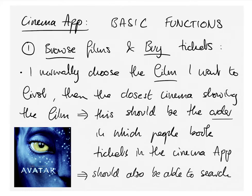The first thing I decided when designing my cinema ticket booking app was what the basic functions are going to be. The first thing it needs to do is let the user browse all the films currently on in the cinema and then buy tickets. When I go to the cinema I know which film I want to watch, then I pick the closest cinema showing that film. This order — pick the film, pick the cinema — is the main way the app needs to be oriented.